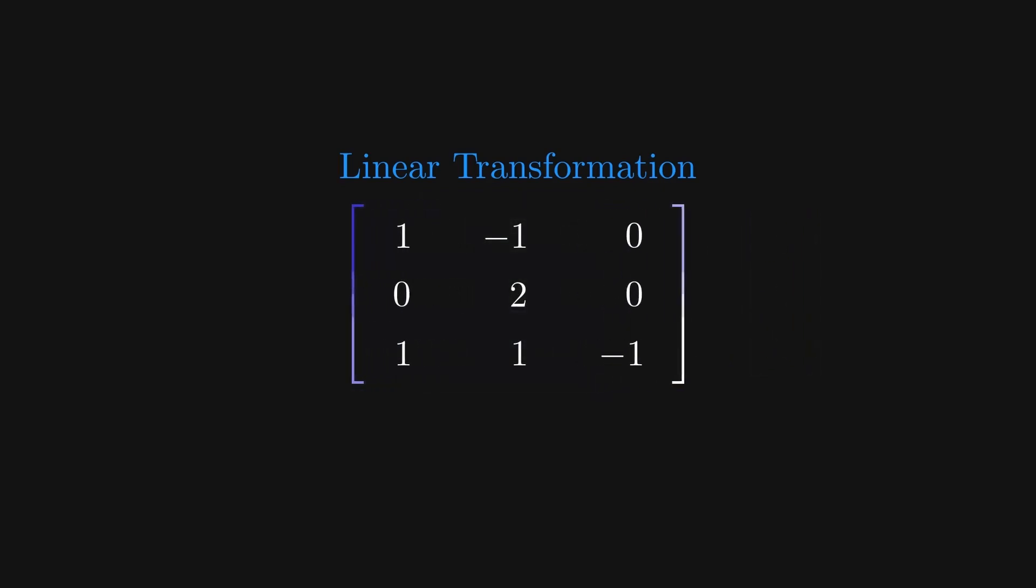While a column of numbers represents an arrow in space, a square matrix of numbers typically represents what we call a linear transformation. It's a function that takes in vectors and outputs different ones. You can calculate this function by scaling each column vector in the matrix and summing row by row to get the output.